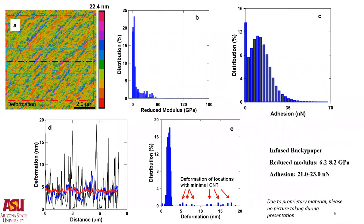Zooming in on this 20-micron-thick Bucky paper and looking at around a 9-micron region, we examine the deformation profile and perform a section box analysis. The red curve — the box analysis over a larger area of around 8 by 8 microns — shows approximately 3.5 to 4 nanometers of deformation throughout the Bucky paper, which is very homogeneous. Meanwhile, the section line (the black line) shows a high level of heterogeneity. The right side of this Bucky paper shows a completely different deformation profile compared to the left side.